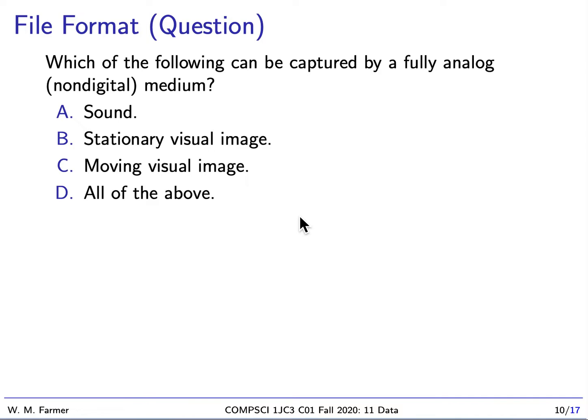Last time we talked about some fully analog media and we mentioned that we have fully analog media for sound, stationary visual image, and moving visual image. So here I mentioned that one example of this is movie film. I should have also mentioned there's another possibility. This is called analog video.